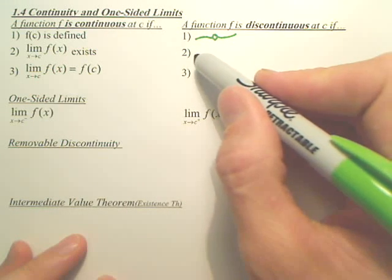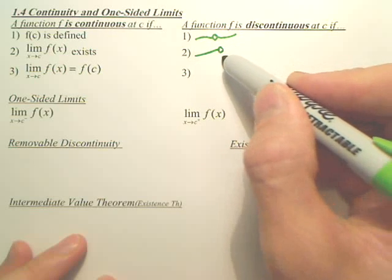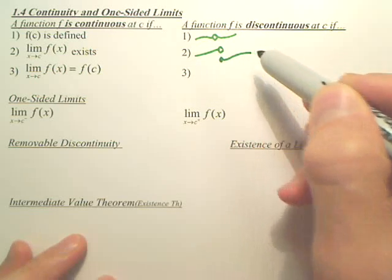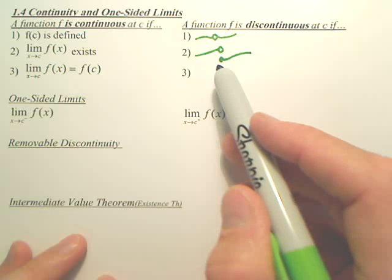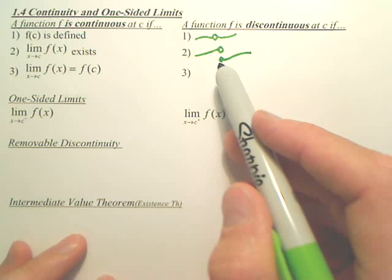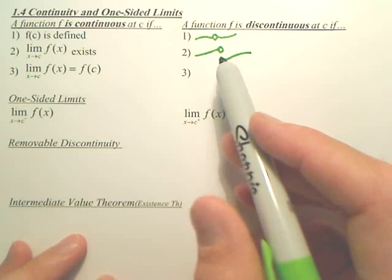An example of that not working would be something like this. Does the limit exist? No. That's a picture of a non-existing limit. Now, you could also have an asymptote or an oscillation, but that's one example.